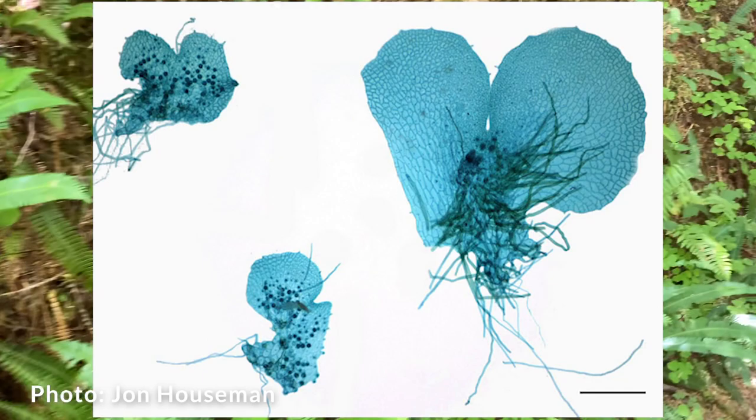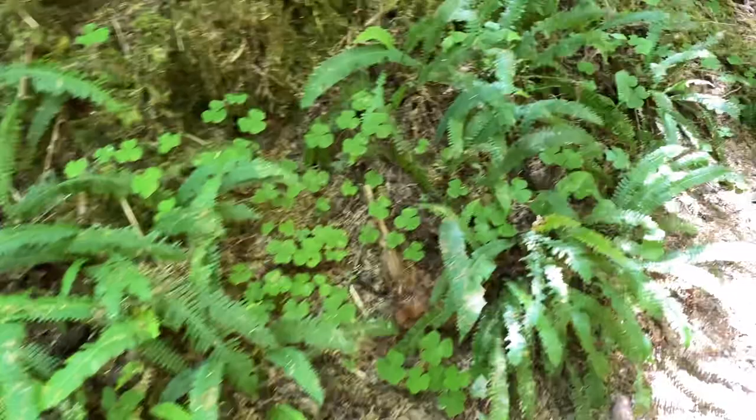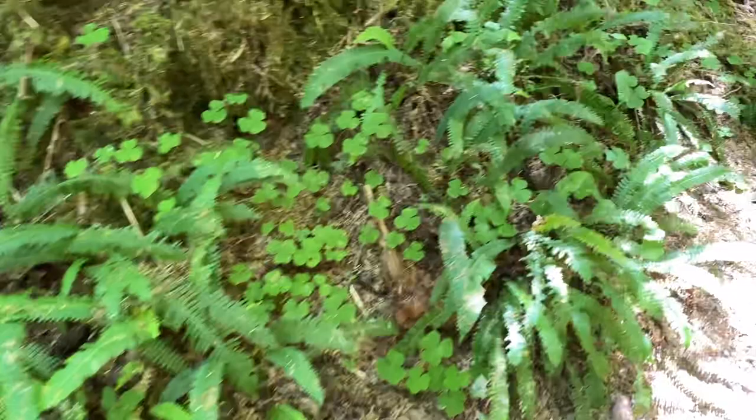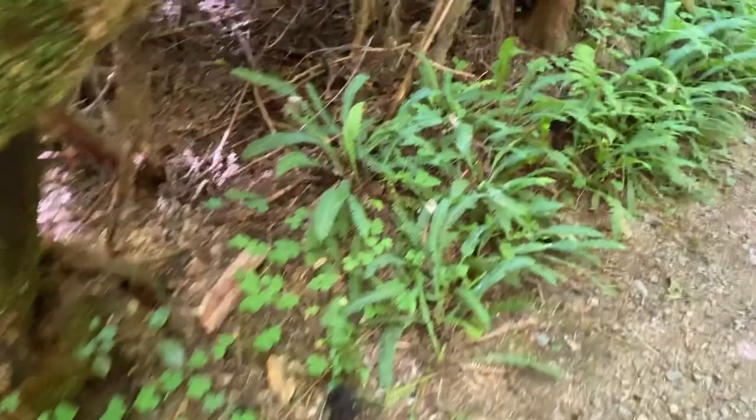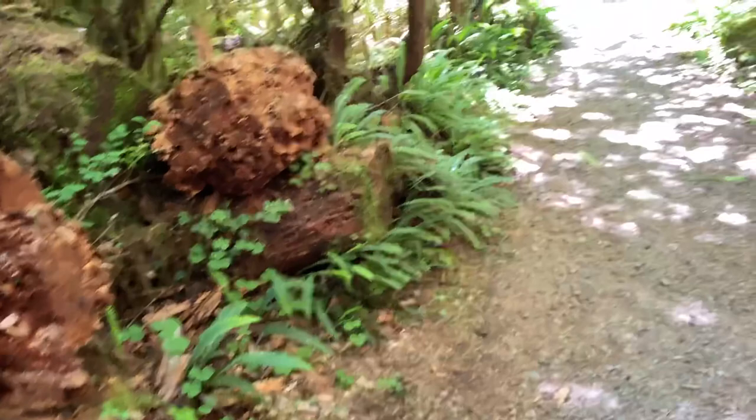These gametophytes will make sperm and egg. The sperm actually have to swim to the egg. So the sperm swims to the egg, they reproduce, and then that reproduction event grows into a new sporophyte fern. So the ferns that we're used to seeing are just part of a fern life cycle. Cool life cycle of these seedless vascular plants — no flowers, they reproduce with spores.